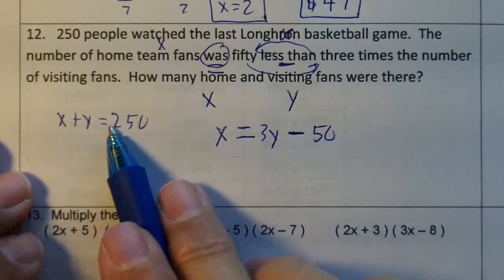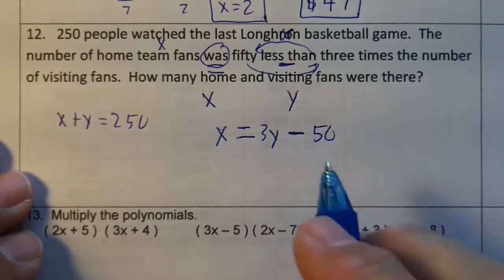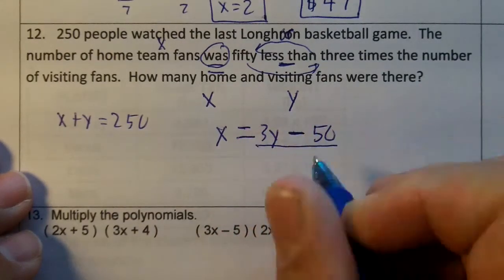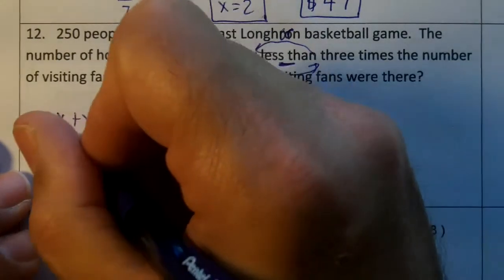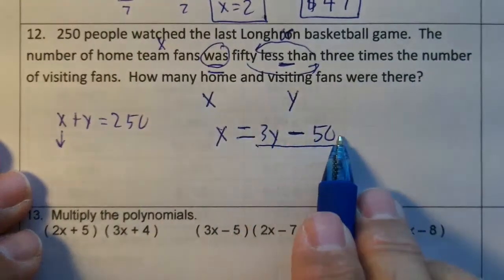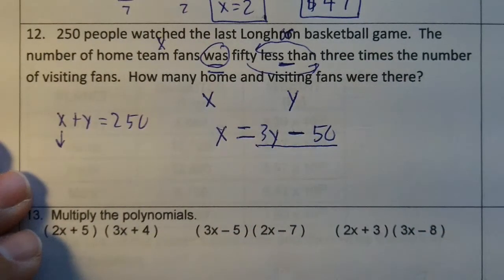So we have a standard and an MX plus B equation. Underline the 3Y minus 50. We're going to replace that X with 3Y minus 50. We're going to substitute on this one.